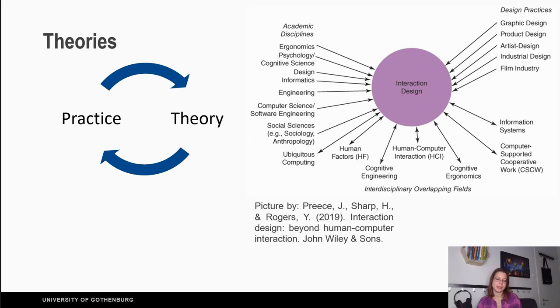Theories can be presented as lenses. For example, motivational theories. Theories that can motivate people to do an action can be a goal setting theory. So you set the goals for the person to be motivated and do an action. And social cognitive theory, where you say that how the environment, the social environment, can influence the person's actions.